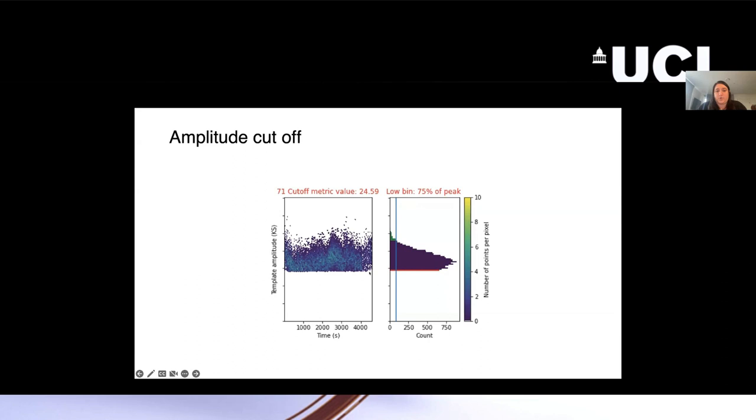This is across the entire recording on the x-axis here. This is just the same data collapsed into a histogram where you can see that this does look pretty cut off. The way that we compute this instead of fitting a Gaussian is we look at this set of bins up by the top here, and we compare this very first bin to that set of bins.